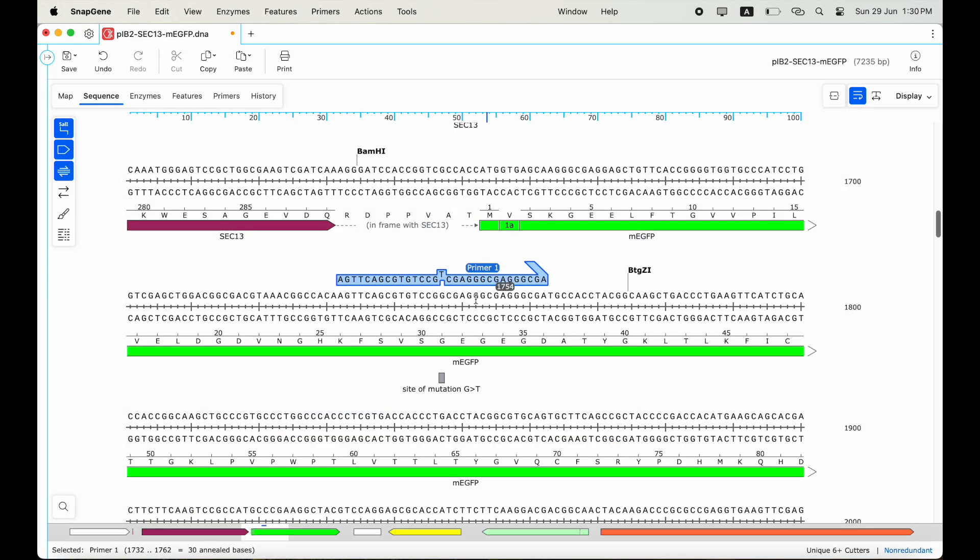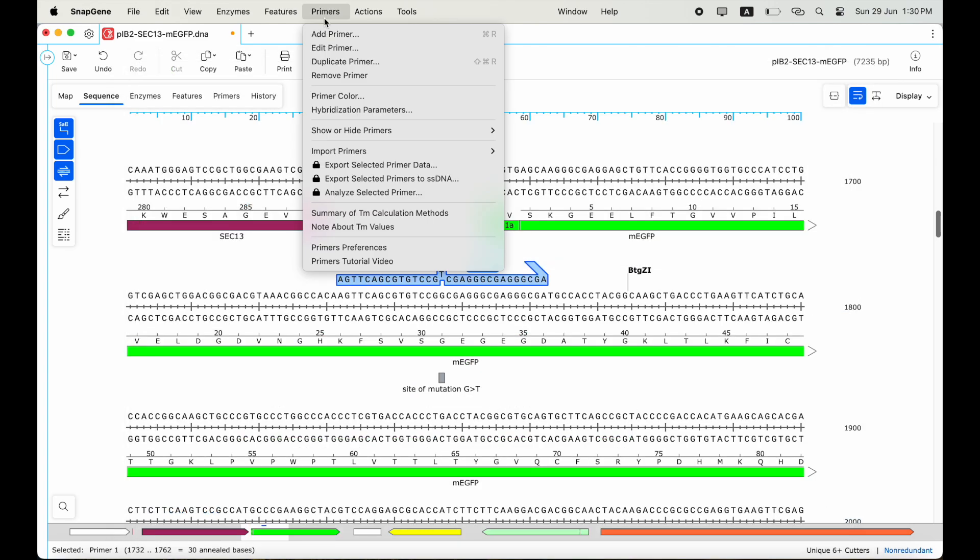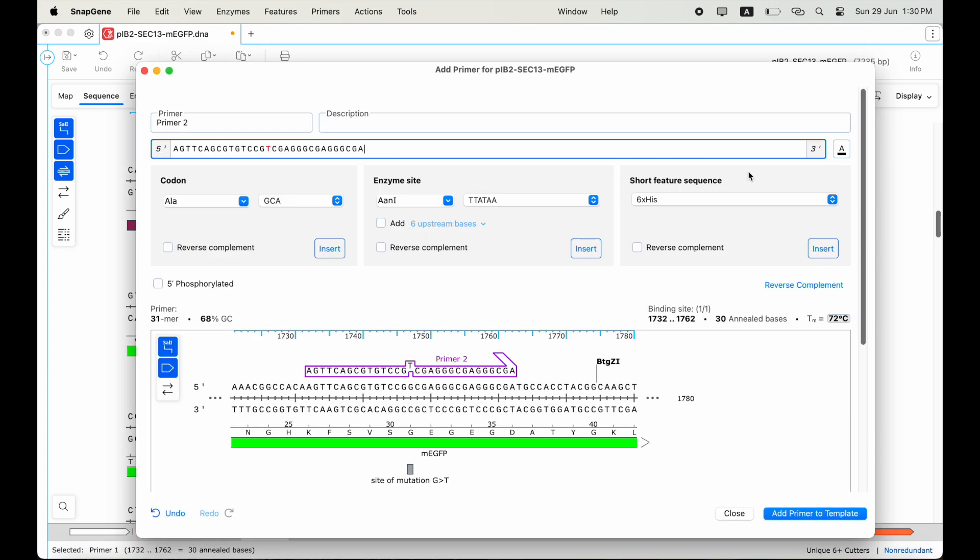Next, I need to add a complementary primer to the one I just created. I will copy the top strand primer, close this tab and add new primer, then select reverse complementary. And it's as simple as that.